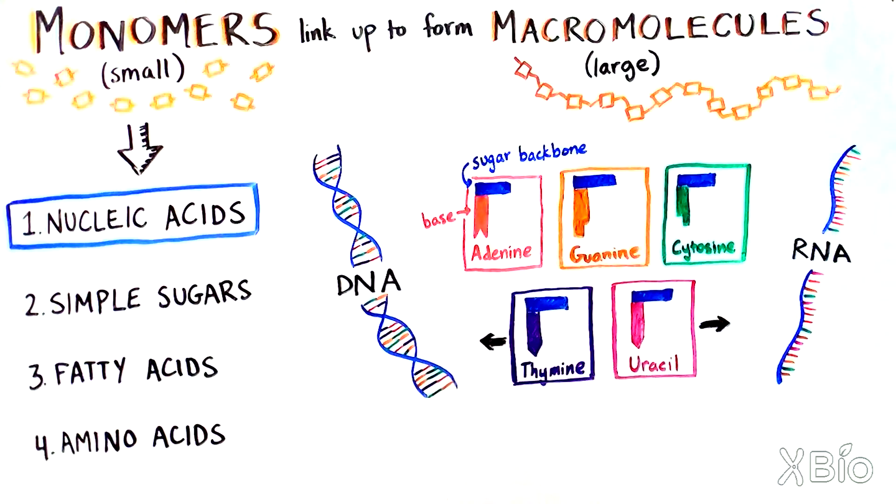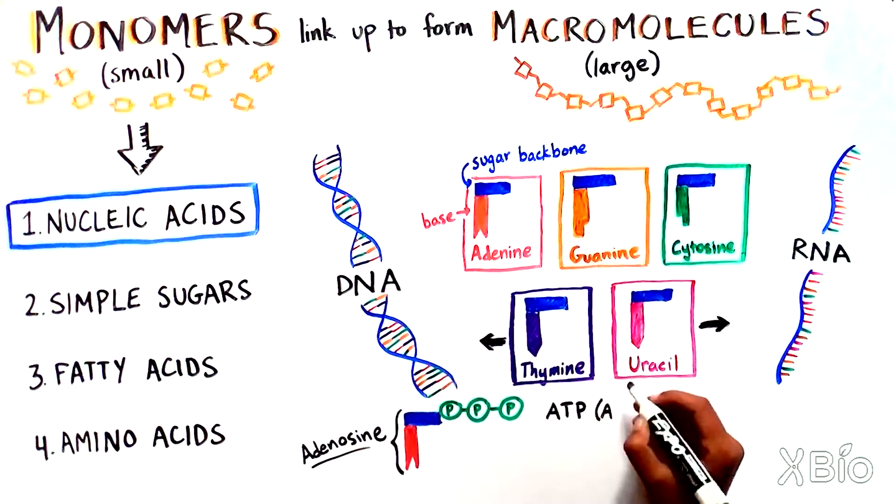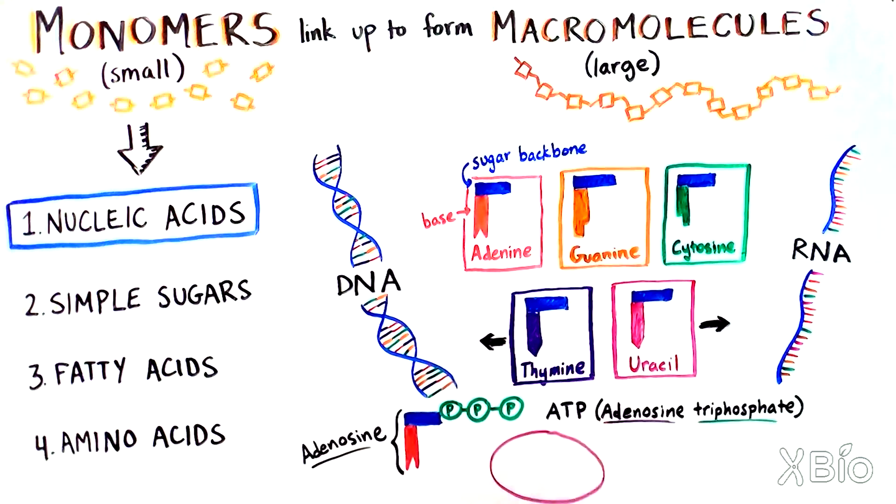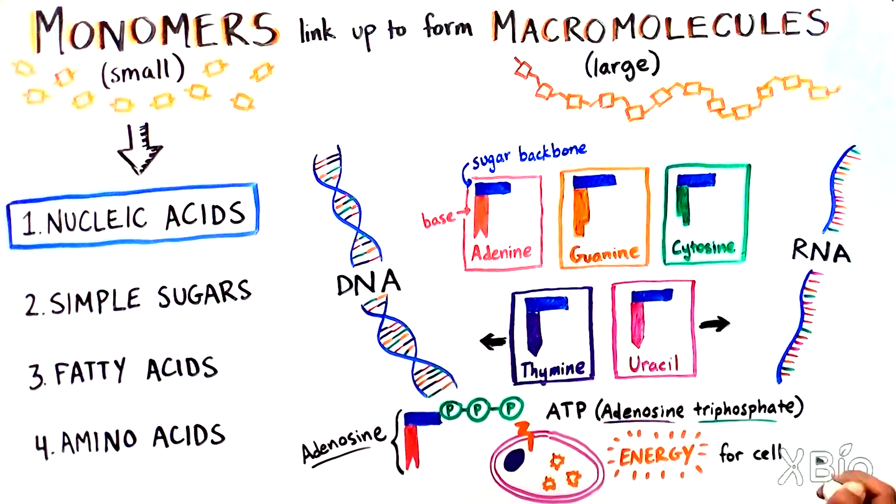The smaller nucleotides also have critical roles in our cells. One of them, adenosine, which is formed when adenine binds to ribose sugar, can be modified to form a molecule called ATP, or adenosine triphosphate. ATP is the most important energy source for our cells.